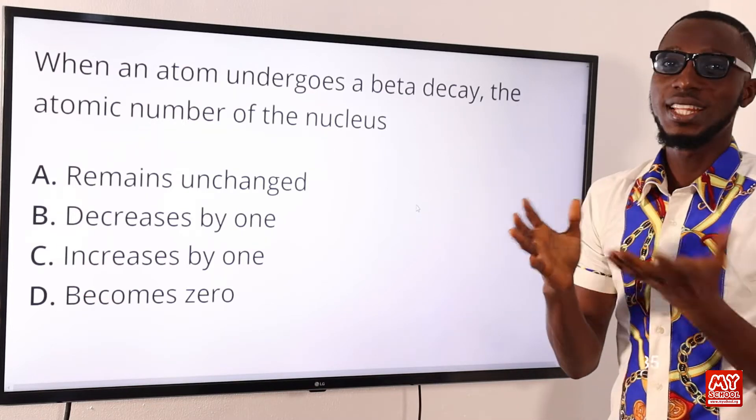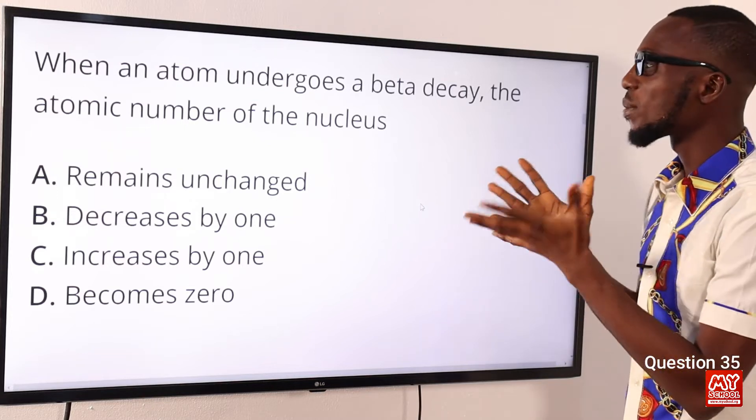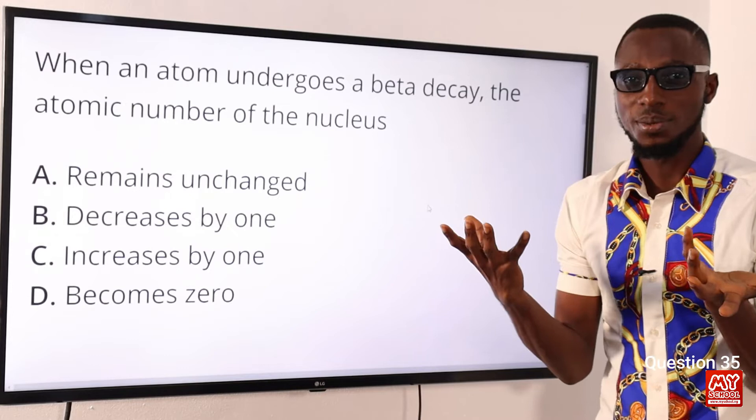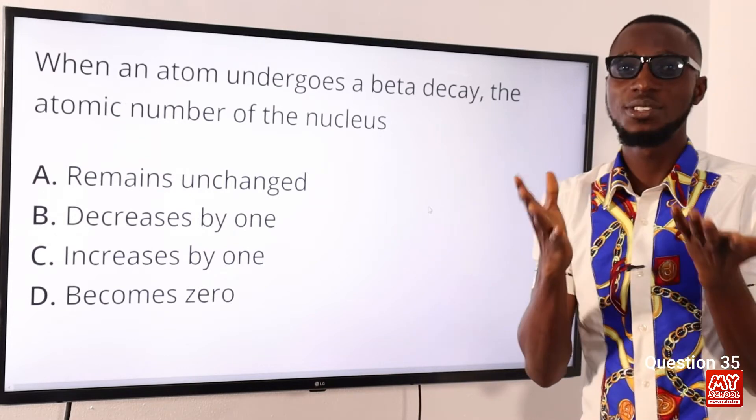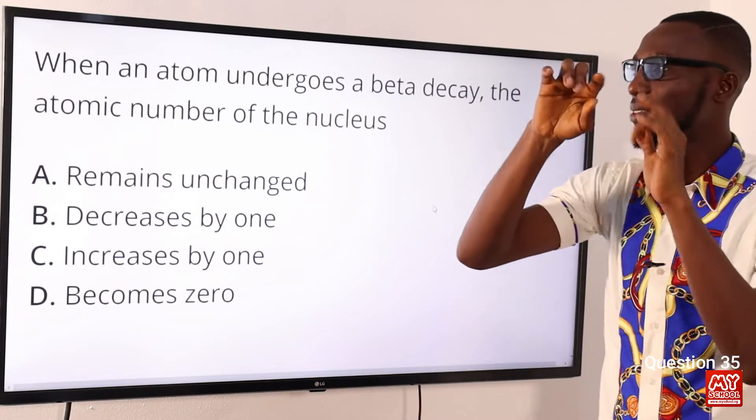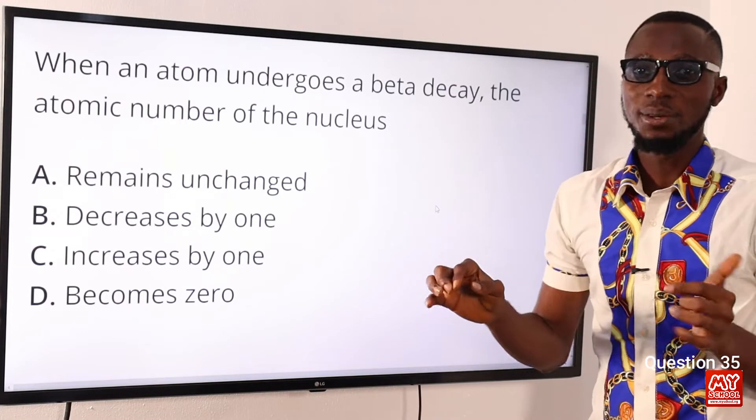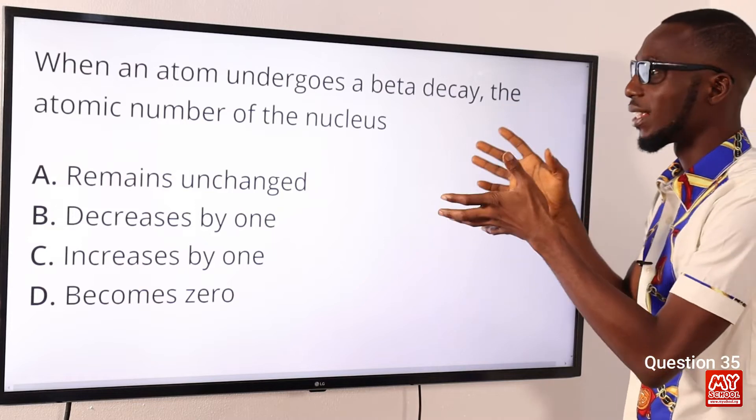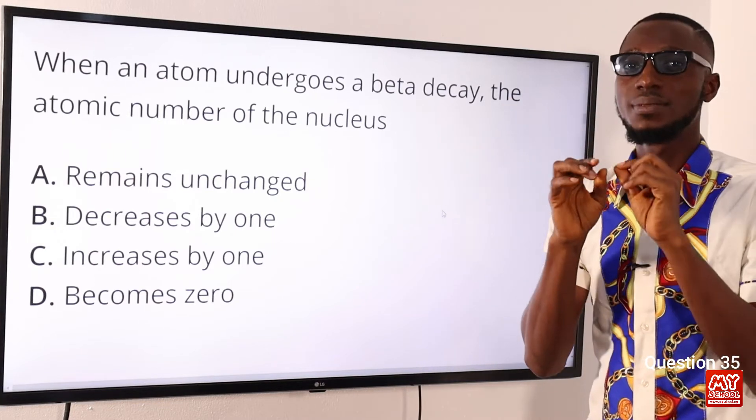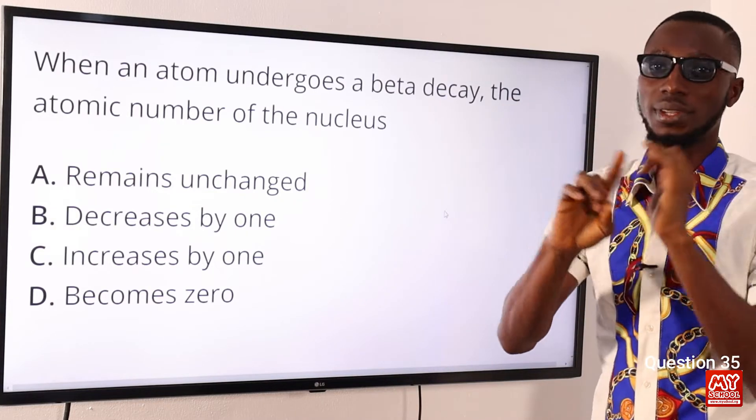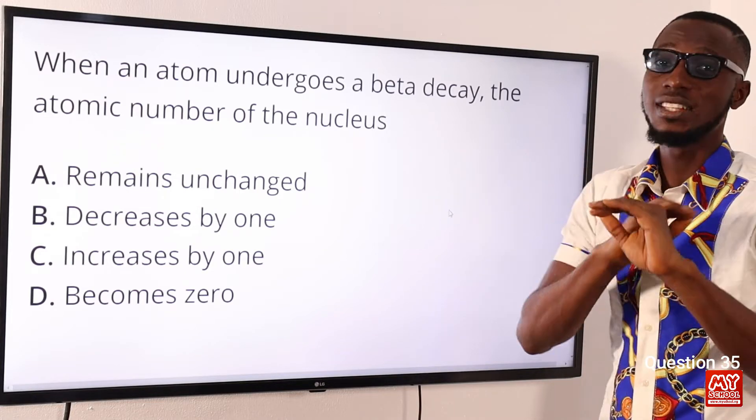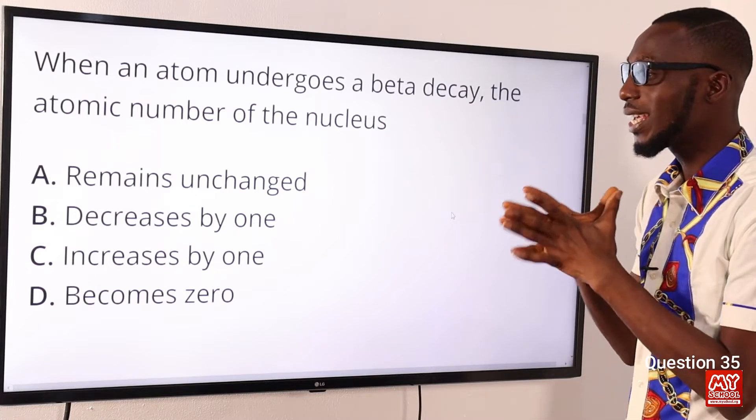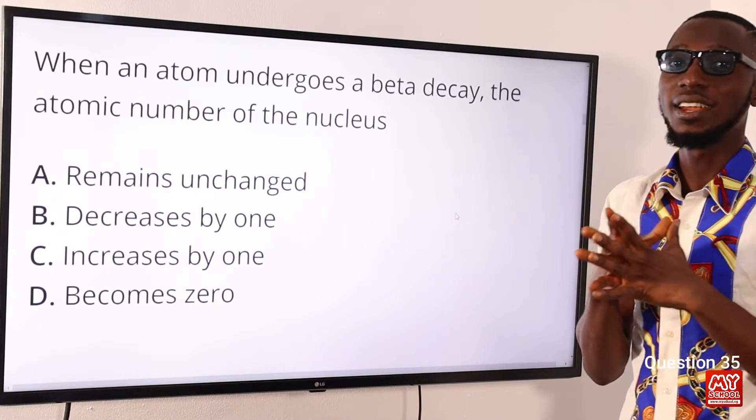Join me as to solve question 35. When an atom undergoes a beta decay, the atomic number of the nucleus does what? So, when you talk about beta decay, you are talking about an electron. Remember, mass is zero, the charge minus one. So, when an atom undergoes beta decay, the atomic number increases by units one. Increases by one. The atomic mass remains unchanged, unaltered. So, the correct option here is option C, increases by one.